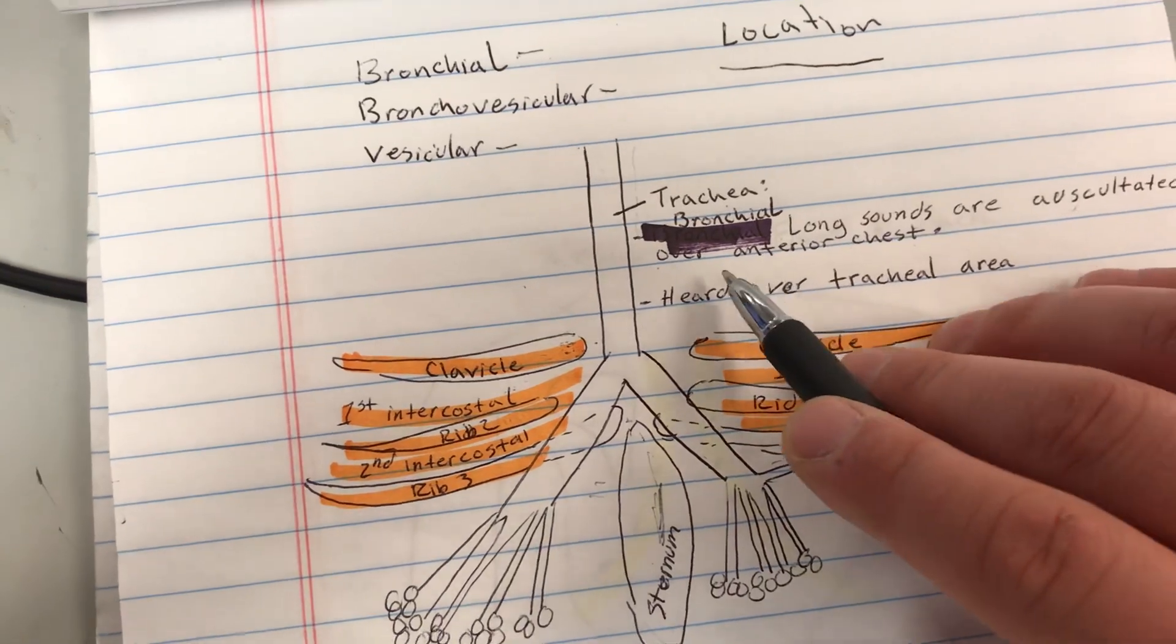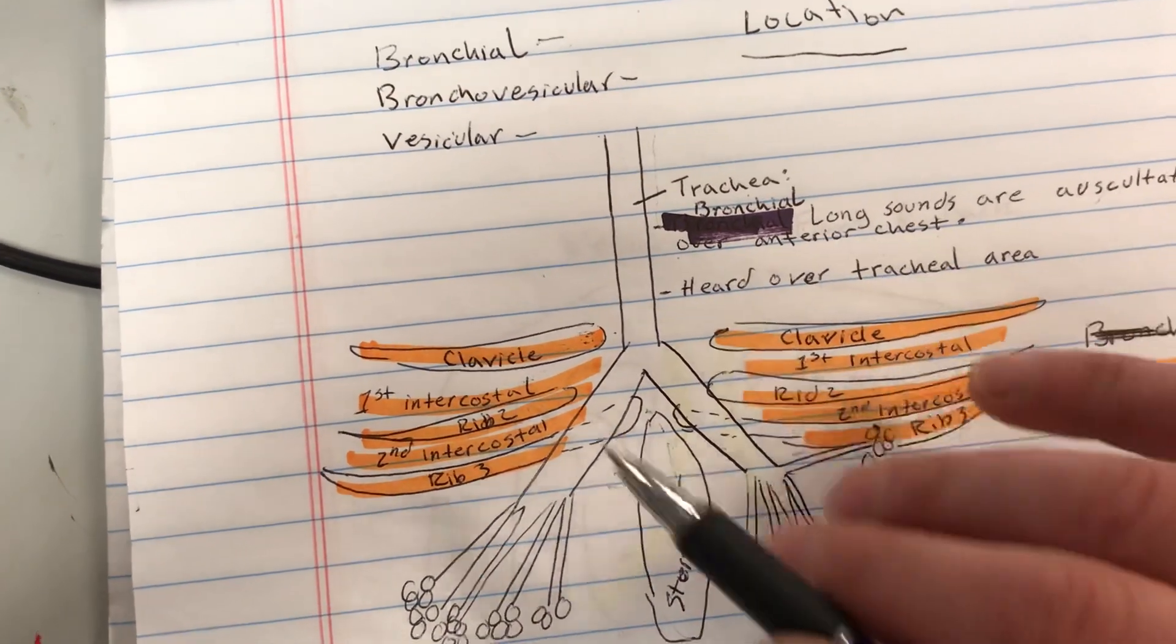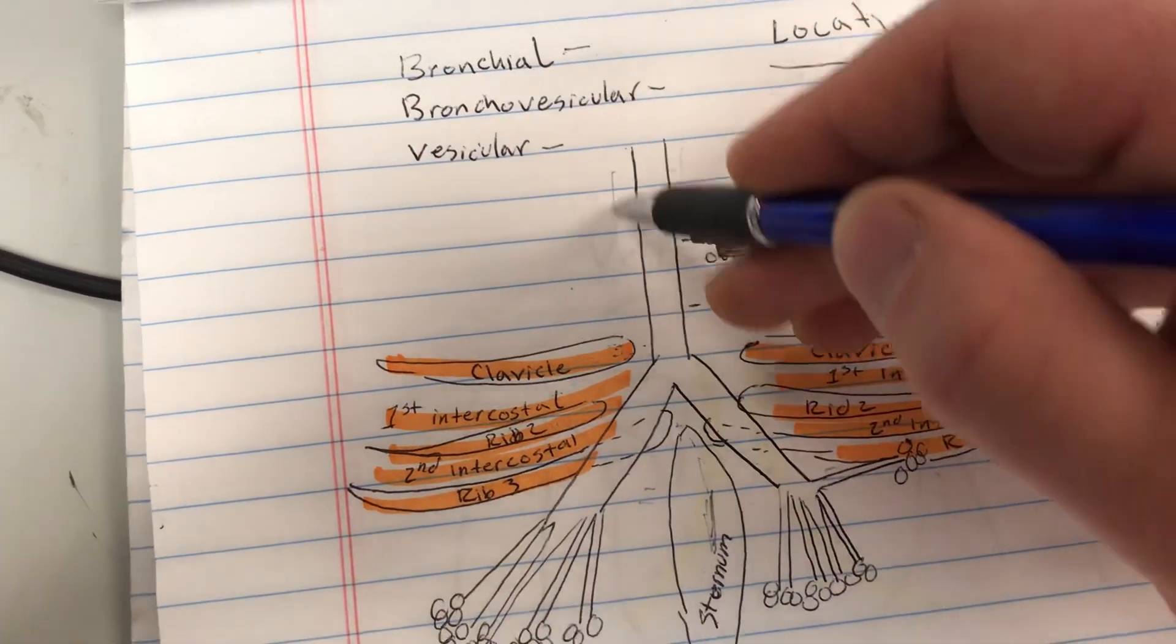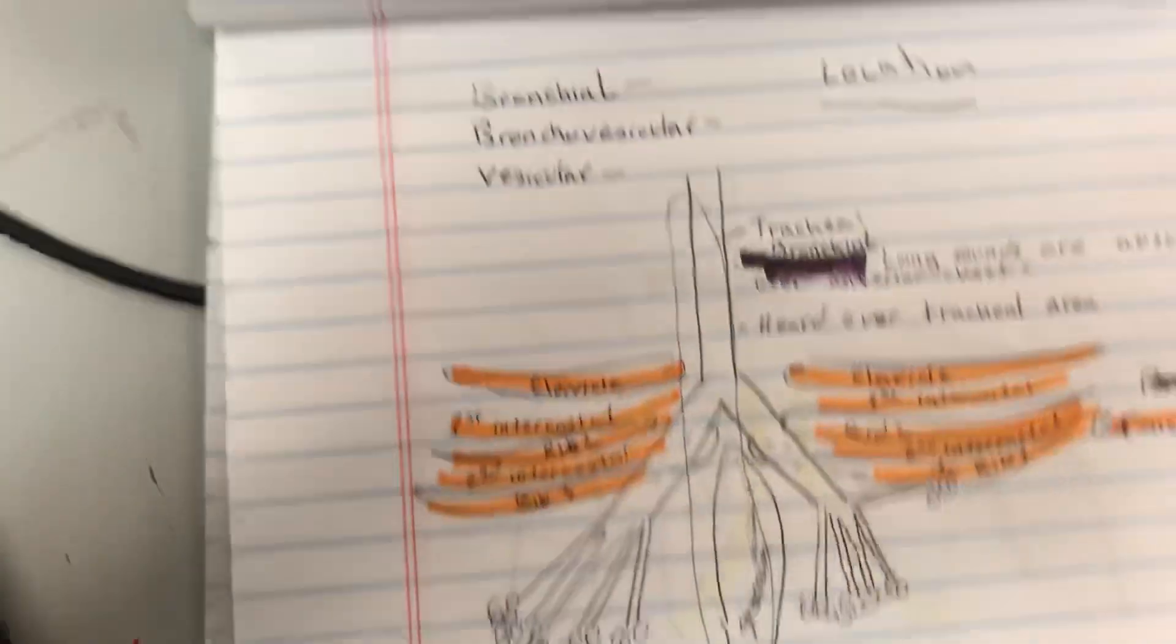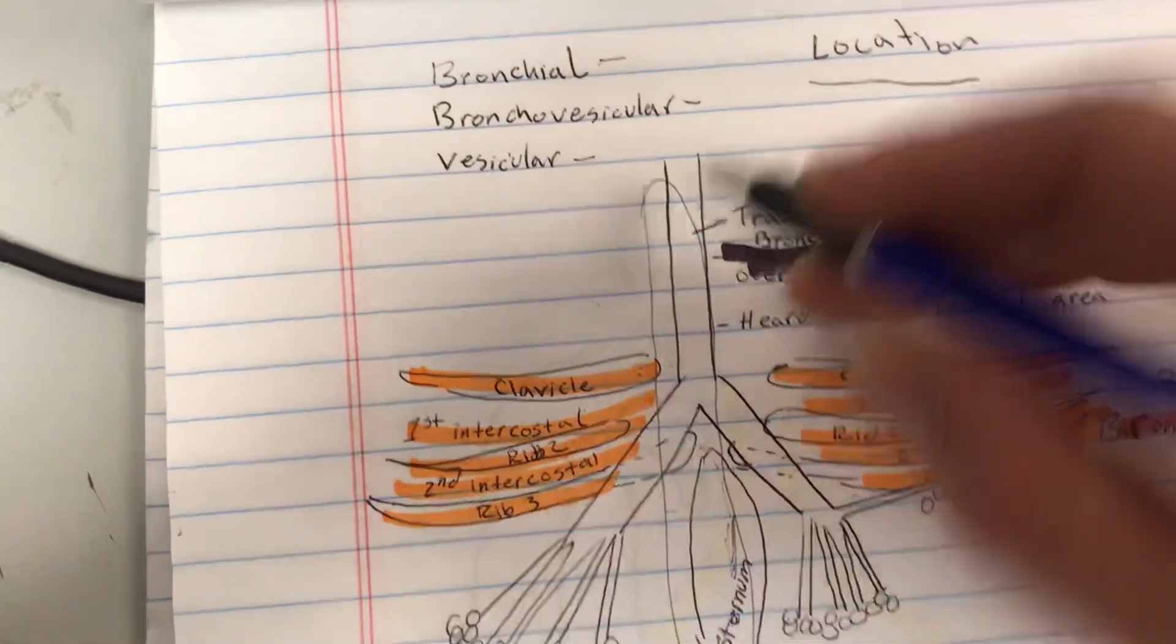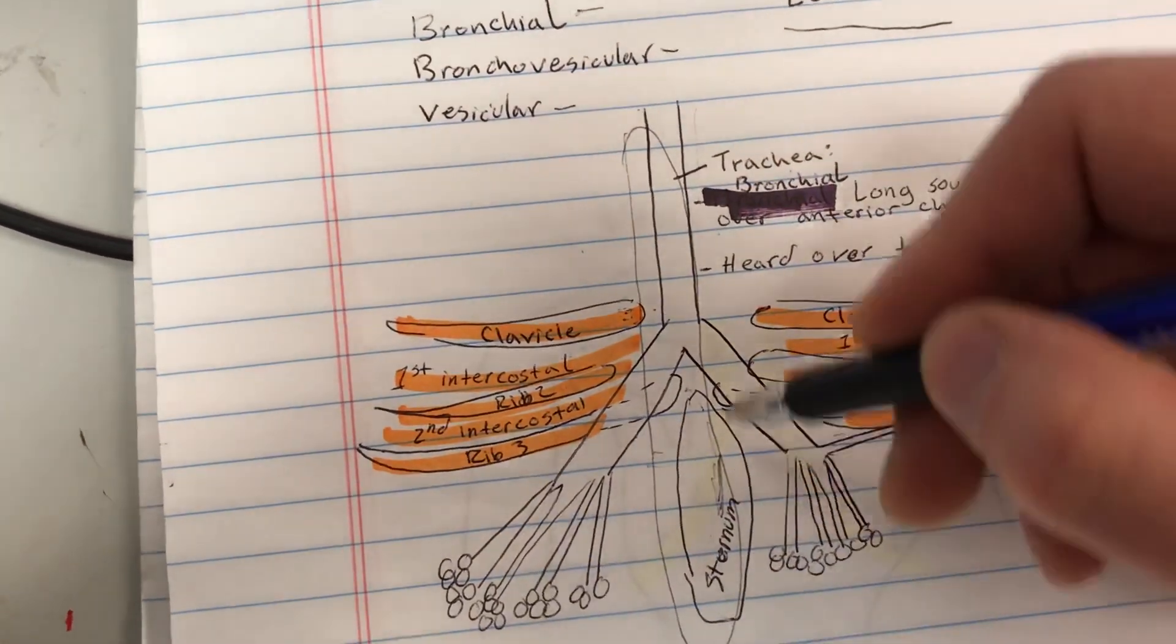Anterior of the body means front of the body. Lung sounds are auscultated over the anterior chest, so the front of the body, usually around this area, the middle part. That's it, that's as simple as that. Bronchial lung sounds just straight down the middle in the chest.